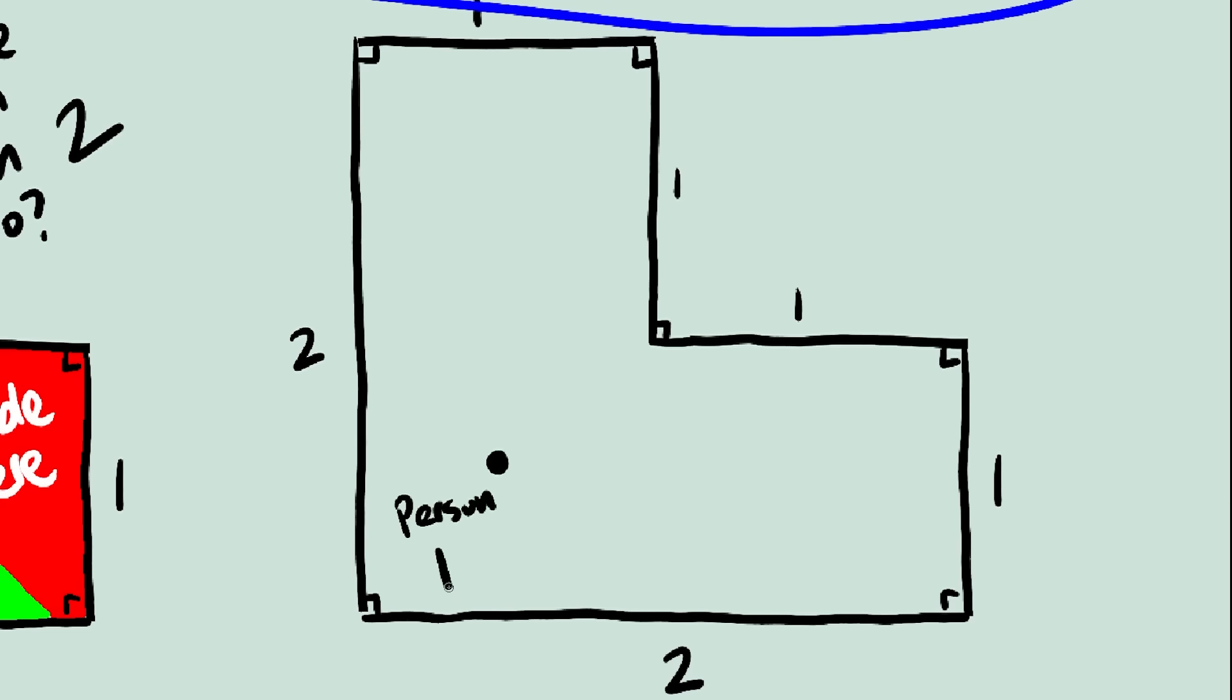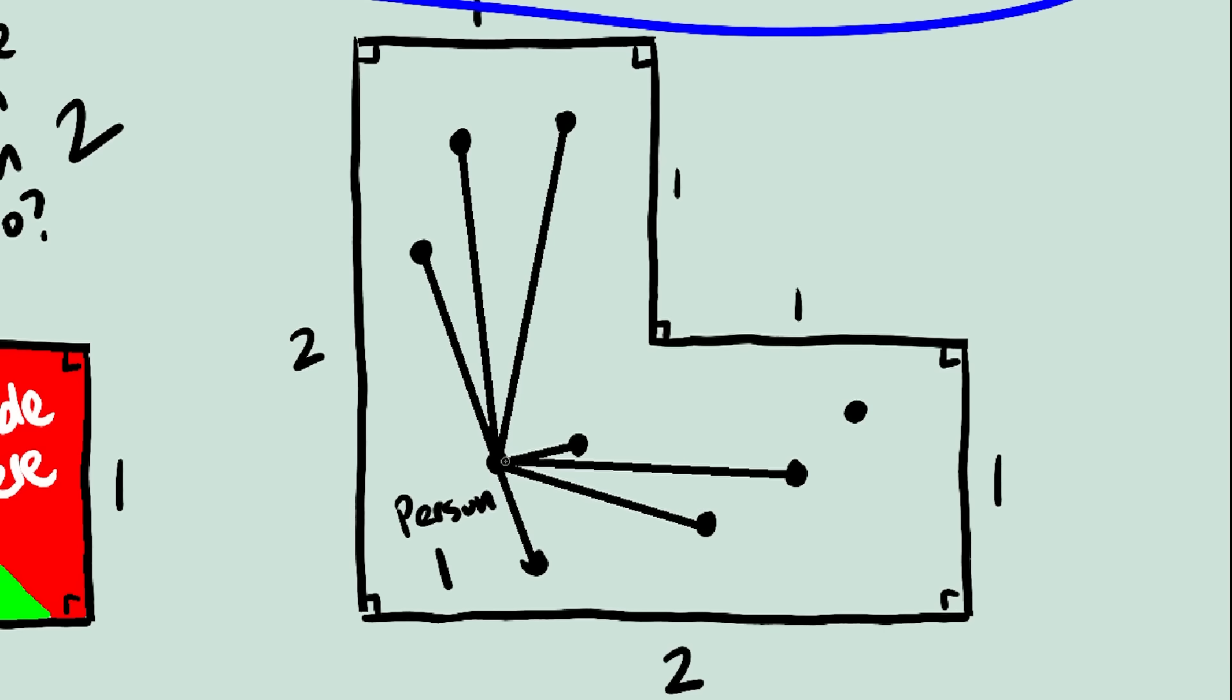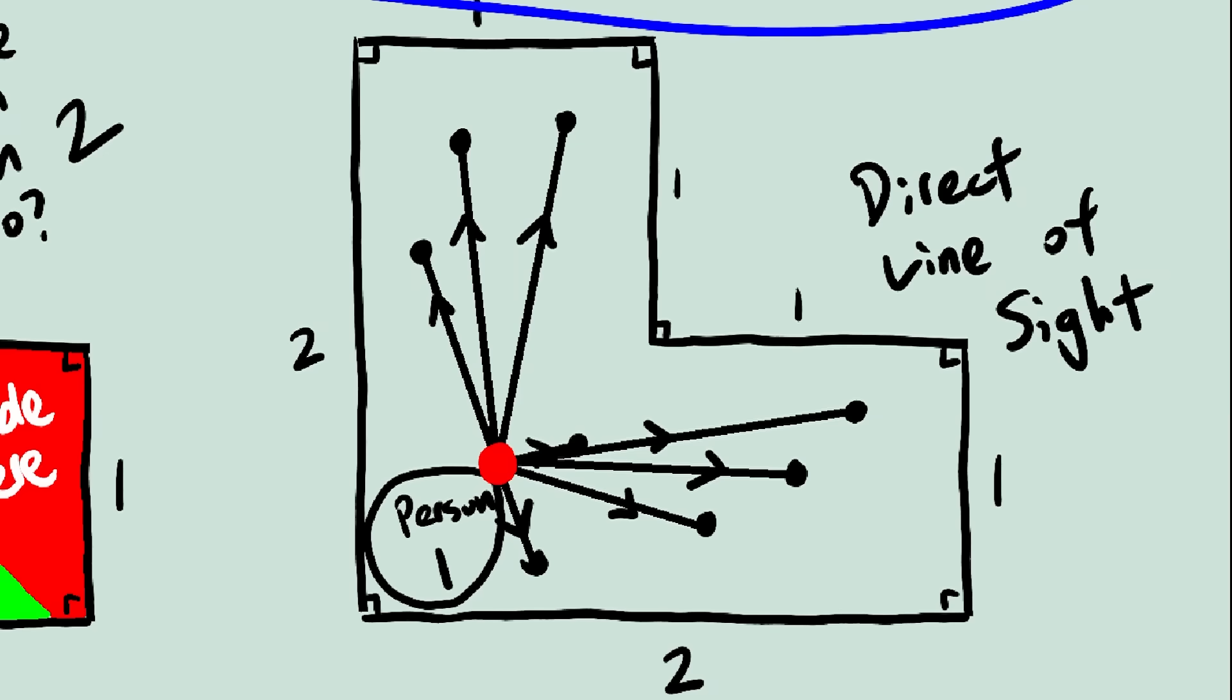For example, if we pick this location, person 2 can be literally anywhere and person 1 will still be able to see them. And if person 1 can see person 2, well then they can see each other. So if person 1 is randomly chosen to be here, the probability of visibility is 100%.